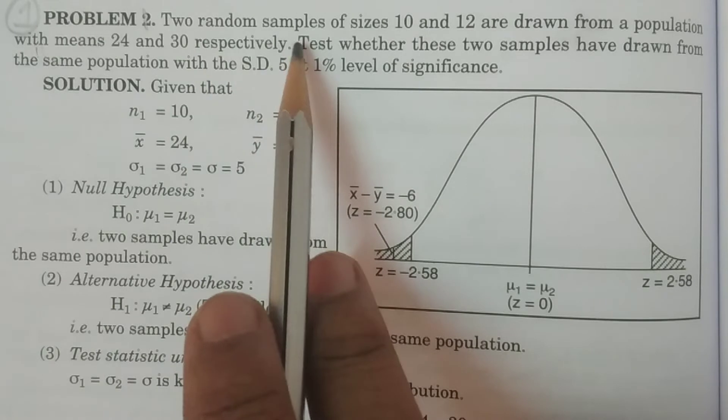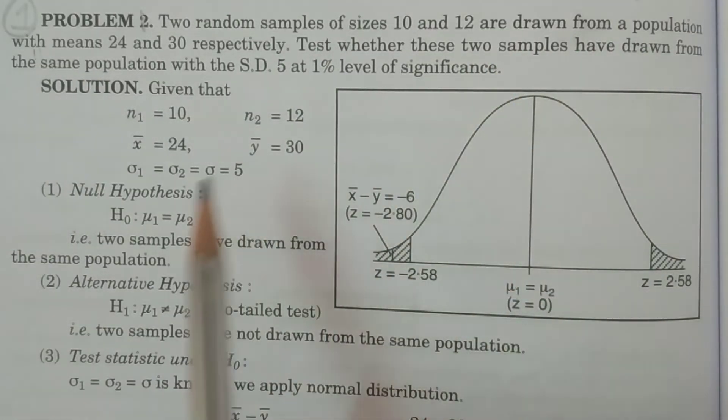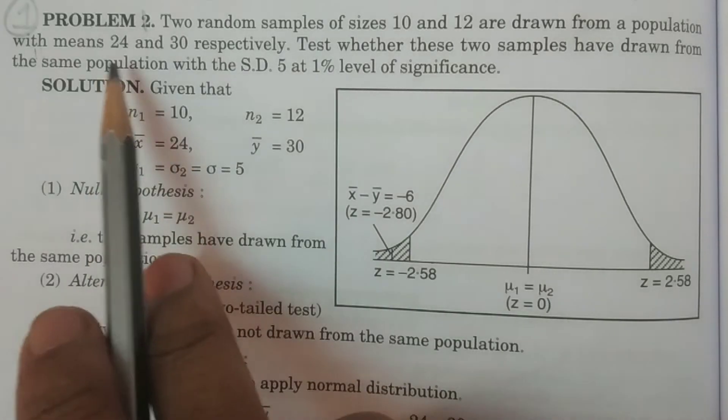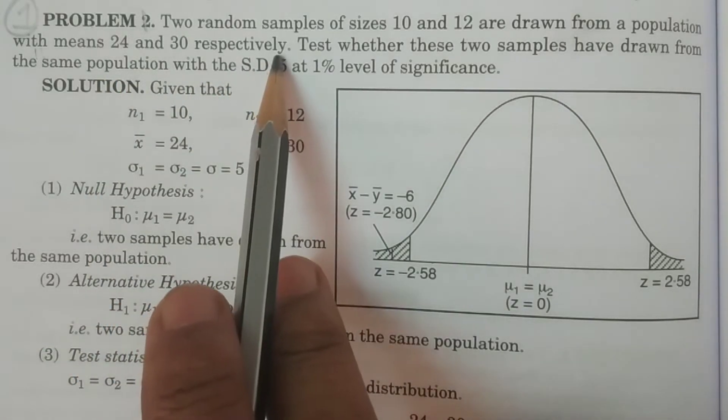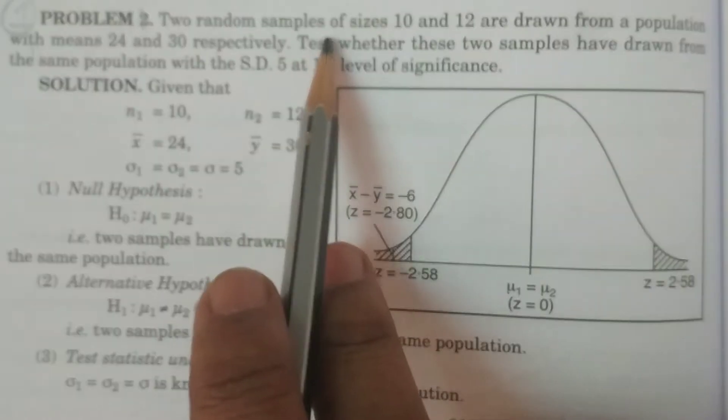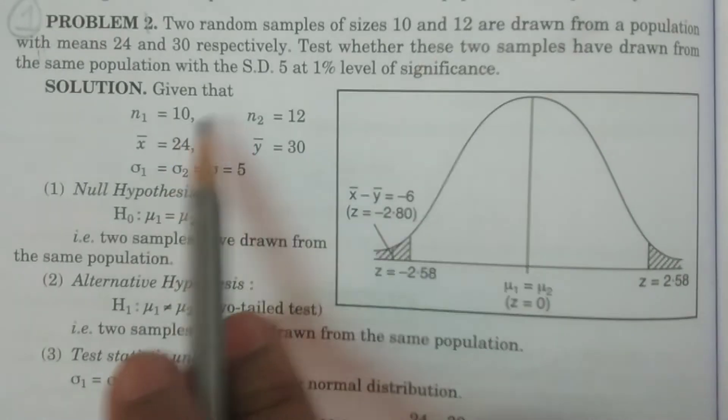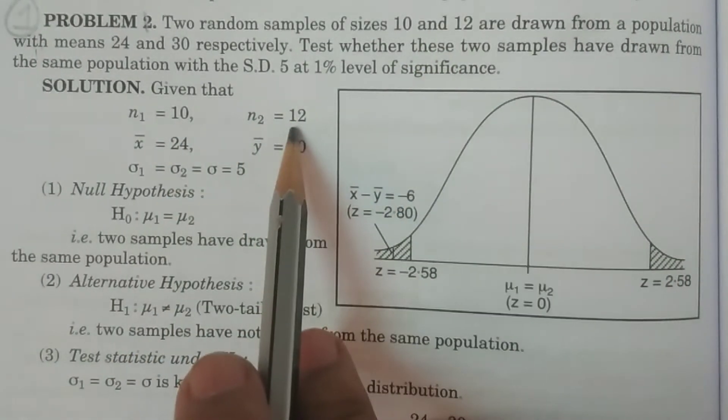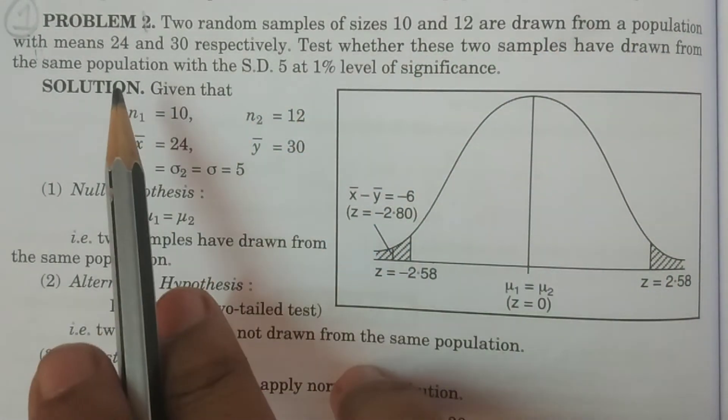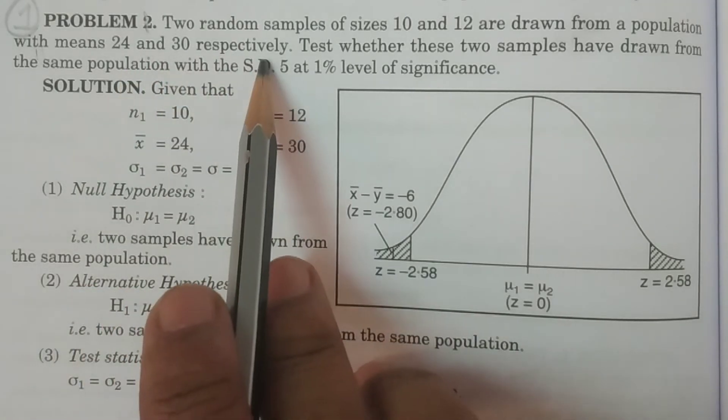Two random samples of sizes 10 and 12 are drawn from a population with means 24 and 30 respectively. Hope you understand the data. Two random samples of sizes 10 and 12, that is N1 equals 10, N2 equals 12.